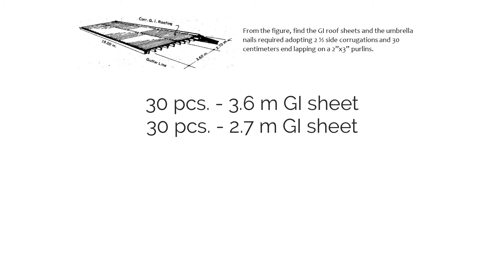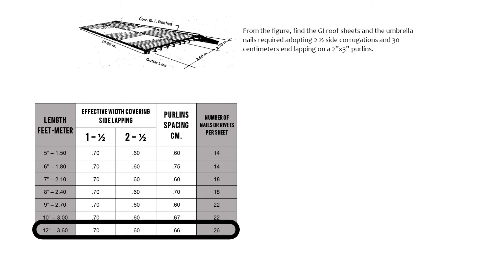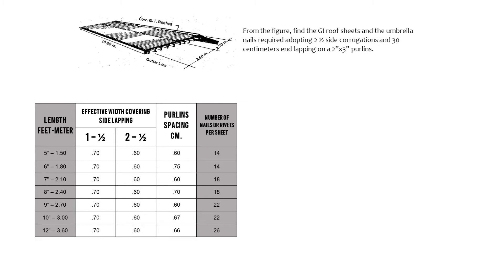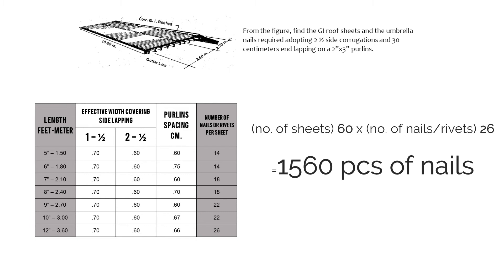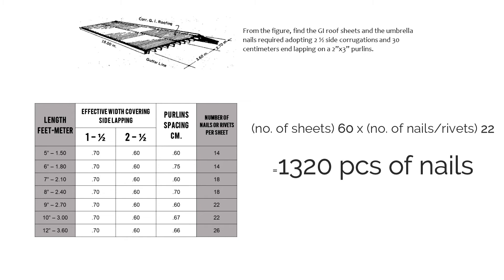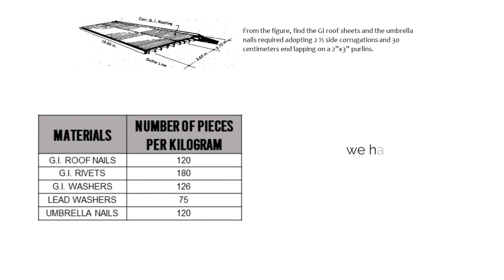Take note that this is only one side of the roof, so for the other side, we double the quantity: 60 pieces of 3.6 meters and 60 pieces of 2.7 meters. For the umbrella nails, 26 nails are recommended for 3.6 meters and 22 nails for 2.7 meters. So 60 pieces of 3.6 meters gives 1,560 nails and 60 pieces of 2.7 meters gives 1,320 nails, for a total of 2,880. To convert to kilograms, divide 2,880 by 120 — the result is 24 kilograms of umbrella nails.